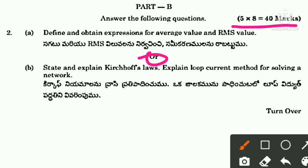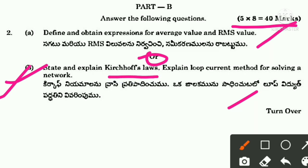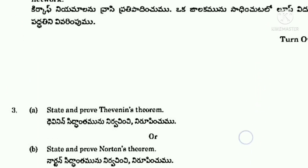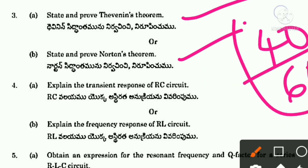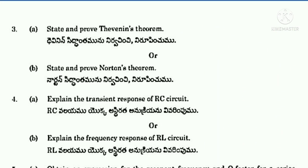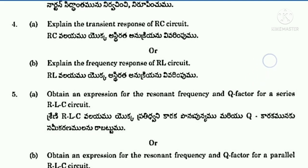Part B essay questions from the previous paper: define and derive expressions for average value and RMS value, state and explain Kirchhoff's law, explain loop current method for solving a network — these are from our most important questions list. State and prove Thevenin's theorem — this theorem is already in our list. Norton's theorem and maximum power transfer theorem are also in our list. The previous paper questions match our list closely. For 60 marks, following our list carefully will get you more than 48 marks.